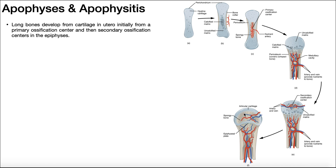It might seem a little obvious, but just to know what the long bones are: in the upper extremity, we have the clavicle, the humerus, the radius, and the ulna. In the lower extremity, we have the femur, the tibia, and the fibula. Those are the long bones we're talking about.